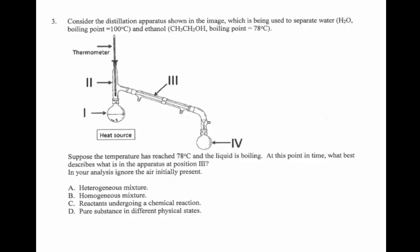Let's see if we can look at an exam question that addresses this point. So we see a distillation setup. This one again has water and ethanol added to it. And the scenario is the temperature has reached 78 degrees C and the liquid is boiling. At this point in time, what best describes what's in the apparatus at position 3? We can ignore the air that was initially present. Take a second, pause the video, see what you think.